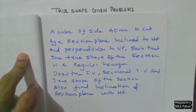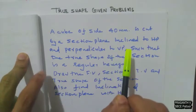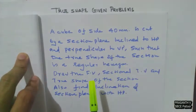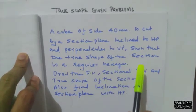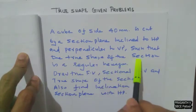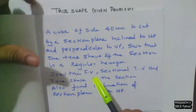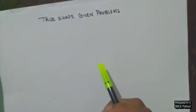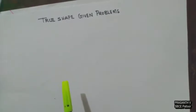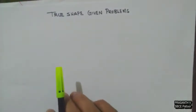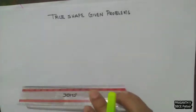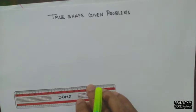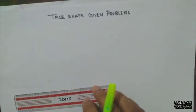So in this problem, the section plane is inclined to HP and perpendicular to VP, but the inclination is not given. The other information we have is that the true shape of the section is a regular hexagon. So from a cube, how will we obtain the true shape as a regular hexagon? For a cube, you will get a regular hexagon by cutting it in only one way.